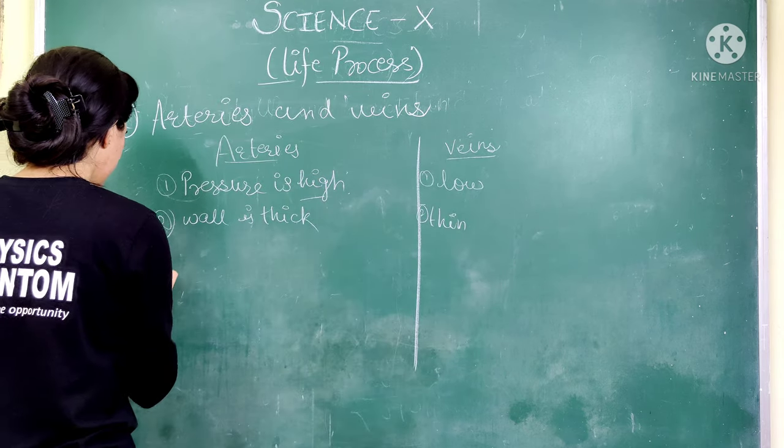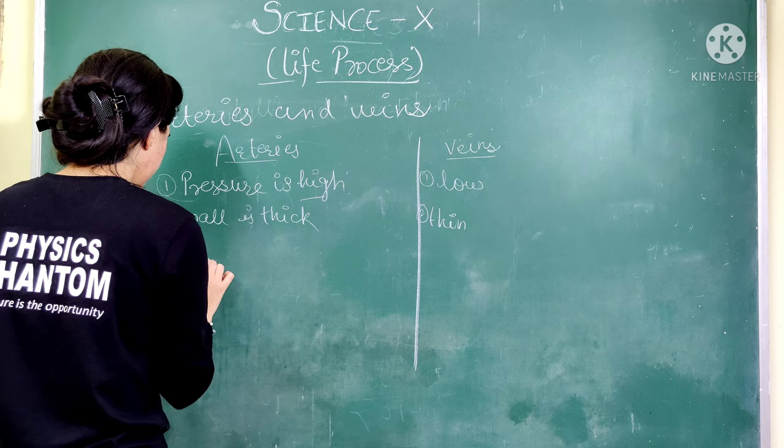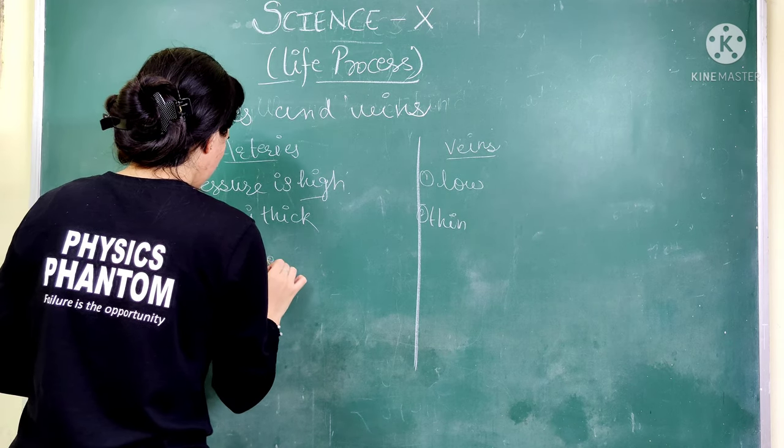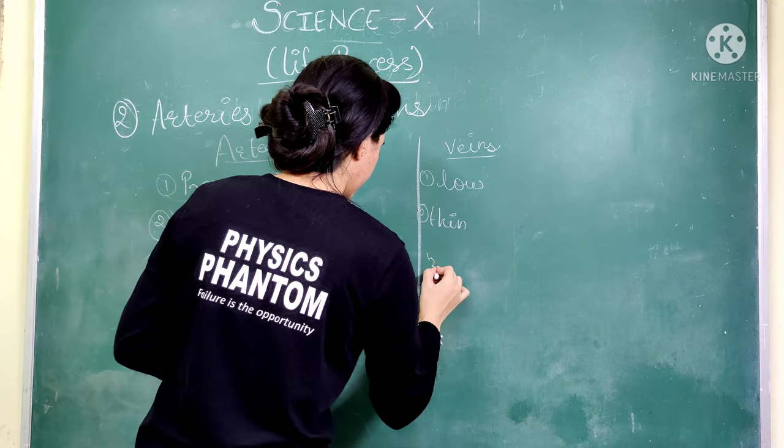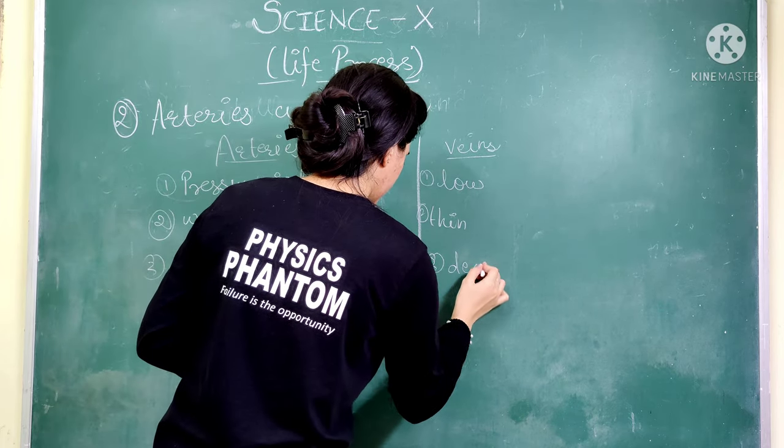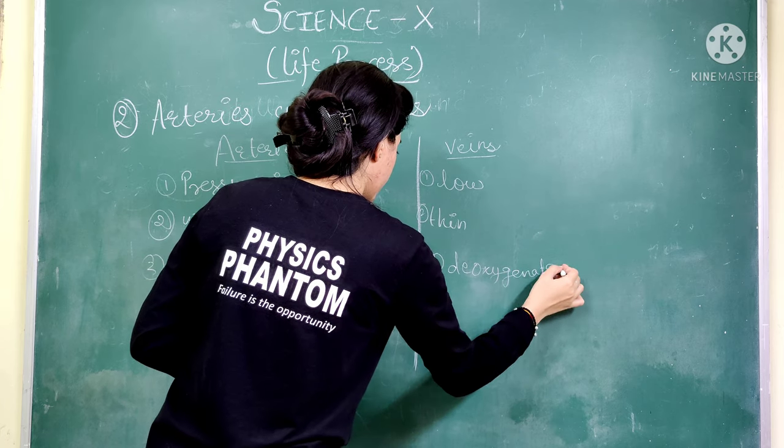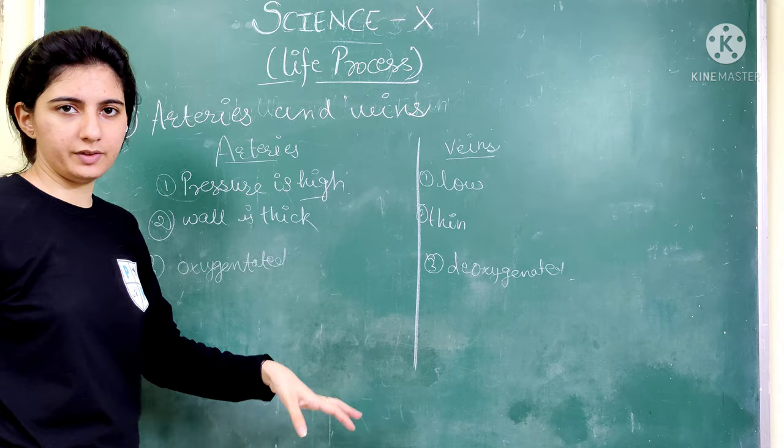Veins are opposite of arteries. The wall is thin, the pressure is low, and they carry deoxygenated blood. These are major differences between arteries and veins.